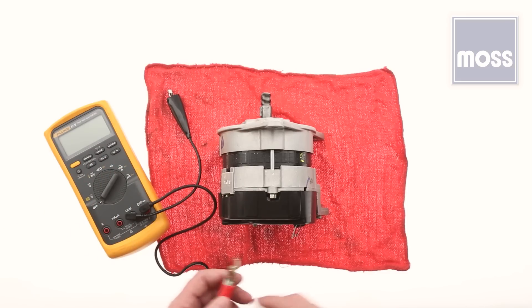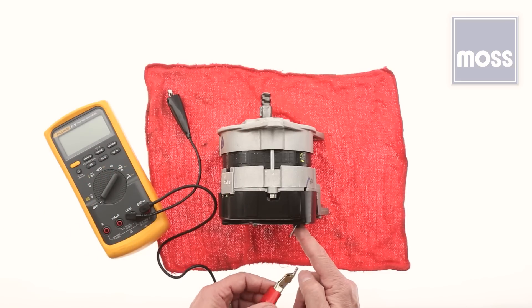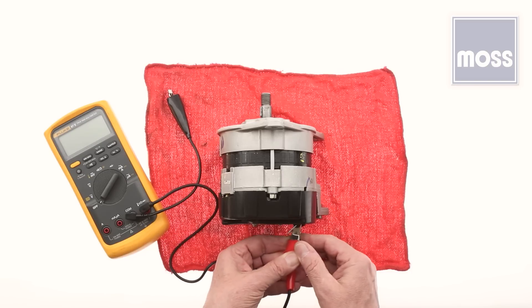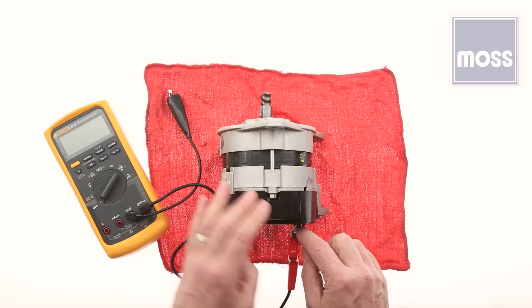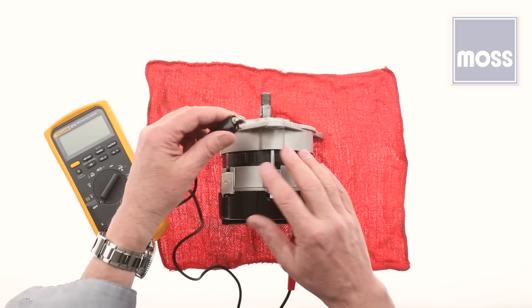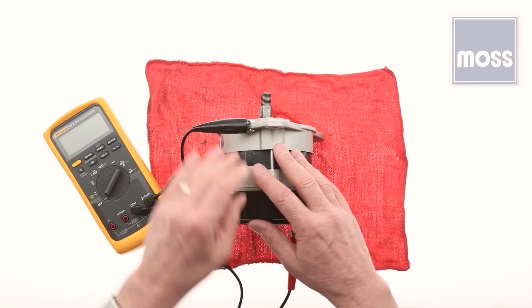We want to take the red lead and go on the back of the alternator where the big cable comes out. That's the one that goes straight back to the battery. We're going to connect right to that. We're not removing anything, just piggybacking on top of it. The black lead, which is our ground, we're going to connect right to the case of the alternator.